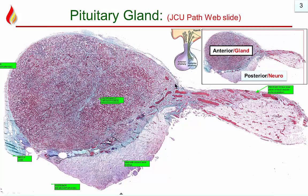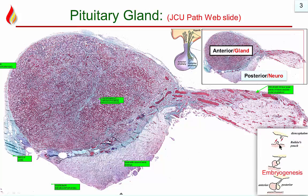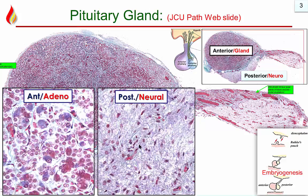There is a nice slide on the JCU web slide showing the anterior and posterior portions. The anterior pituitary is glandular, develops from Rathke's pouch — the epithelium of the nasal cavity — which joins with the neural crest, the diencephalon, to together form the pituitary gland. The anterior pituitary has endocrine gland cells of three types: basophilic blue cells, acidophilic red cells, and clear cells known as chromophobes.